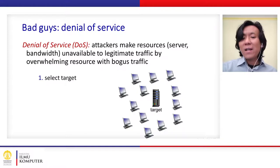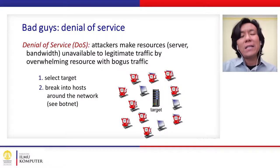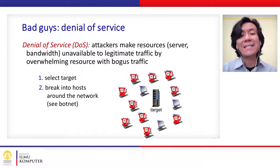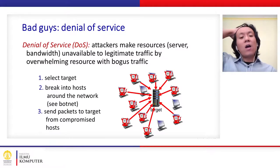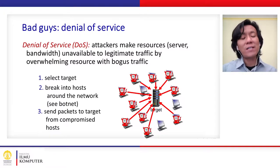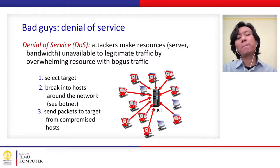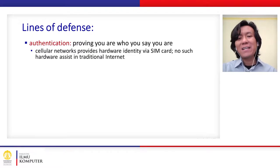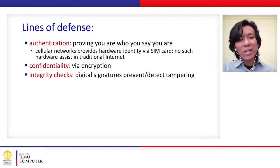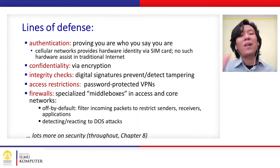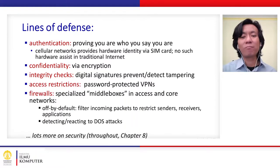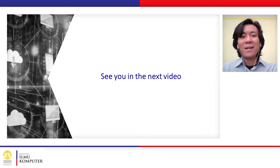The third attack is called Denial of Service (DoS). It happens when a particular server is flooded with fake requests so it cannot serve actual legitimate requests — attacking the availability of the server. The lines of defense include: authentication, confidentiality, integrity checks, restriction, and firewalls. We will learn more about these in chapter 8. That's all for this topic — see you in the next video.